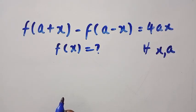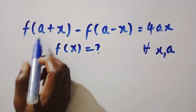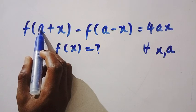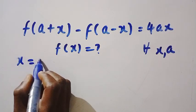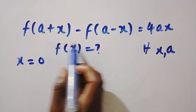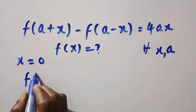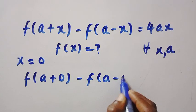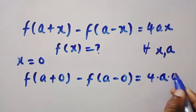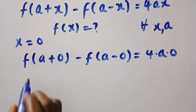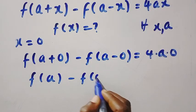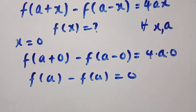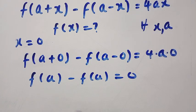This is a very simple functional equation problem. Let's solve it step by step. First, let x equal 0. We get f of a plus 0 minus f of a minus 0 equals 4 times a times 0, which gives f of a minus f of a equals 0. This equation gives no useful information, so we neglect letting x equal 0.